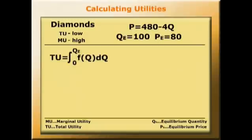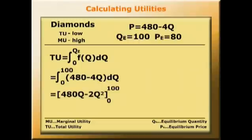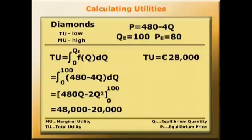So the total utility of diamonds is the integral from zero up to QE of f of Q dQ. That is, the integral from zero to 100 of 480 minus 4Q dQ, which gives us 480Q minus 2Q squared from zero to 100. Taking the value of this at 100, and subtracting the value at zero, and then multiplying out, we have 48,000 minus 20,000, so that TU equals 28,000 euros.